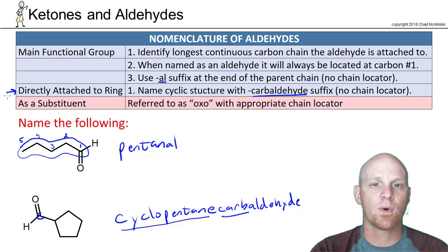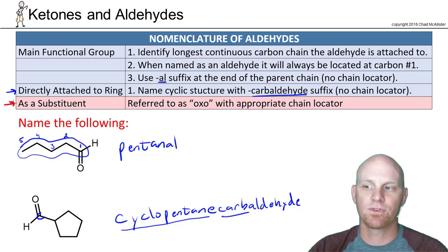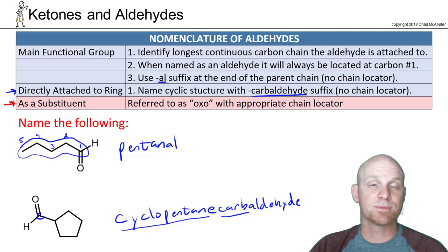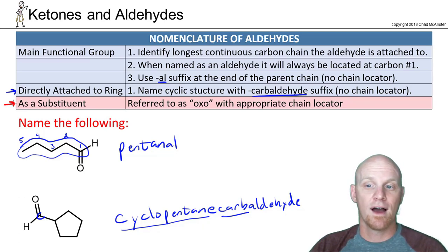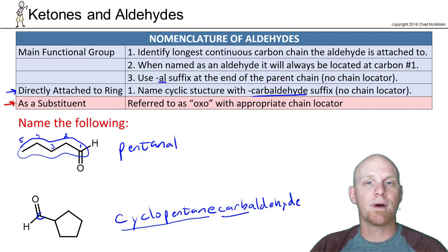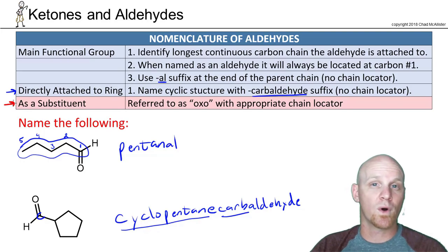One more thing: just like with ketones, aldehydes can be named as an oxo-substituent when they're not the main functional group. We won't see that in this chapter, but in the next chapter we'll learn functional groups that are even more important than aldehydes. At that point, we'll come back and name an aldehyde as a substituent rather than the main functional group.